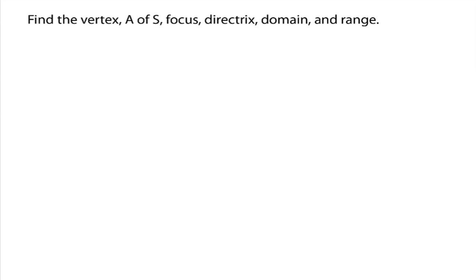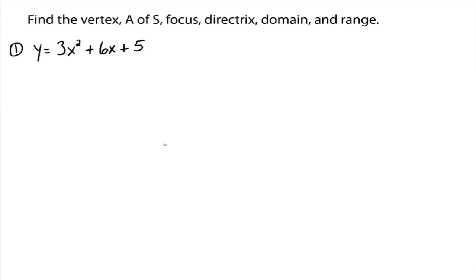So now the dilemma is going to come from: can we find the vertex, the axis of symmetry, the focus, directrix, domain, and range if our equation is not written in that standard form — the HK form, if you will. Our goal is to actually take this equation and do some algebra on it to put it into that form. The way to do that is the process of completing the square.